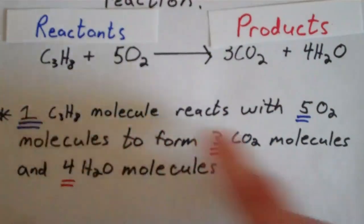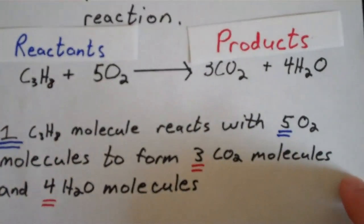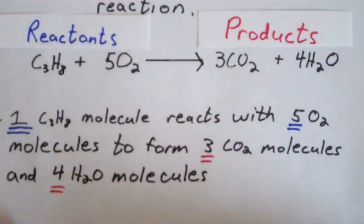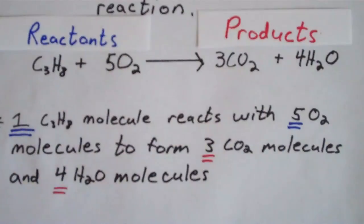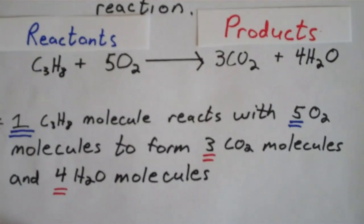Now these underlying numbers here, these are called the stoichiometric coefficients. And that means how many molecules do you need of that particular chemical species to make this particular reaction balance?